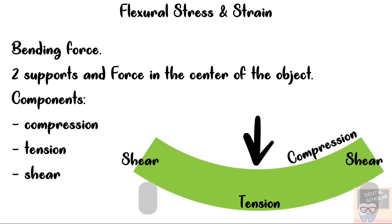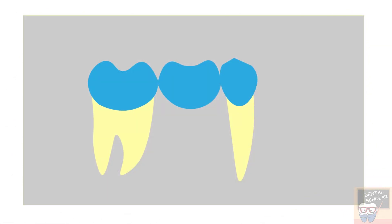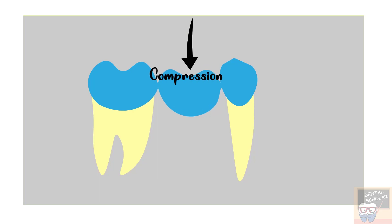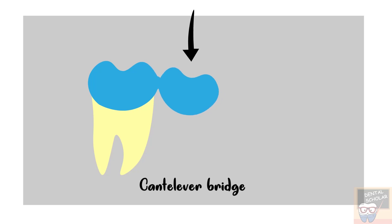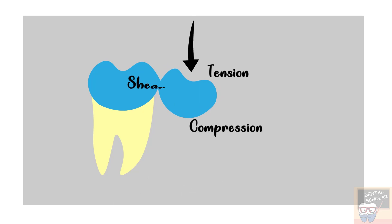Flexure in the oral cavity is seen in a bridge. In a three- or four-unit bridge supported at both ends, compression occurs on the occlusal side, tension on the gingival side, and shear stresses are seen on the abutment. In contrast, a cantilever bridge supported only at one end results in tension on the occlusal side and compression on the gingival side — tension and compression switch places compared to a conventional bridge.